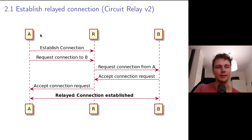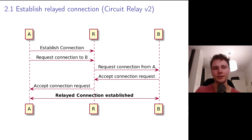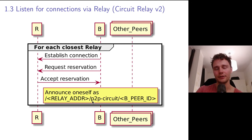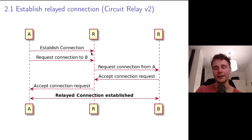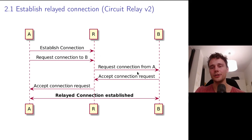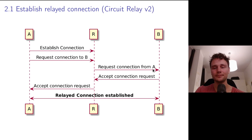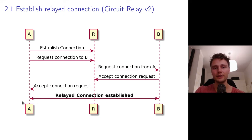Now phase two: A wants to connect to B. Both are within home networks behind firewalls. Through B's previously announced relayed address, A first reaches out to relay R, establishes a connection, and requests a connection to B. The relay forwards that request to B over the keep-alive connection; B accepts; R forwards the acceptance to A. From now on A and B can use this relay connection through R to exchange bytes — all bytes go through the relay and are forwarded to B.